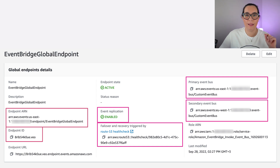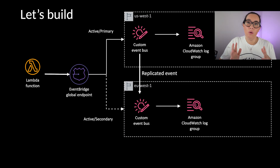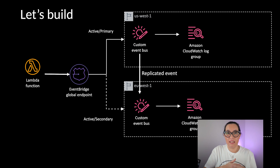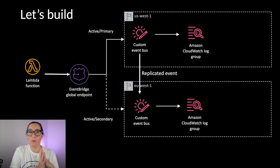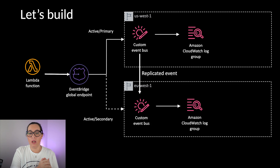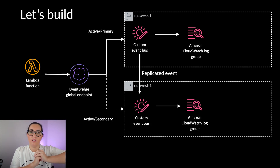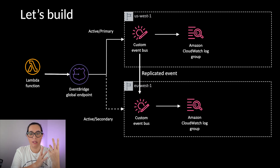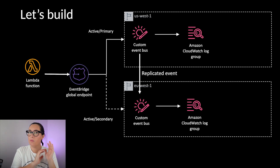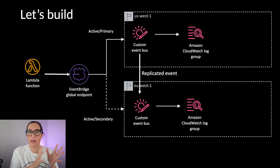Now we can build something and see this in action. We use that global endpoint and build an application that has a Lambda function putting events into the global endpoint. We have two stacks — one primary and one secondary — that are exactly the same. Both are active-active, so everything is deployed, ready, and working.